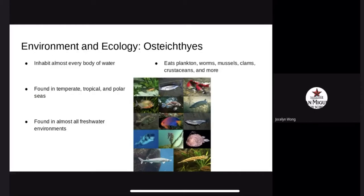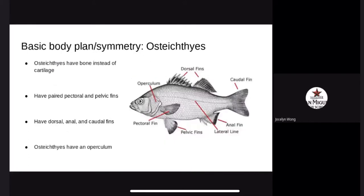Osteichthyes can eat plankton, worms, mussels, clams, crustaceans, and more. Some species of Osteichthyes can tolerate higher levels of salinity than others. Basic body plan: Osteichthyes have bone instead of cartilage, and they have paired pectoral and pelvic as well as dorsal and anal fins. Osteichthyes have an operculum, a bony flap of skin over the gills to protect them. The operculum opens and closes to help the fish breathe when they are not swimming.